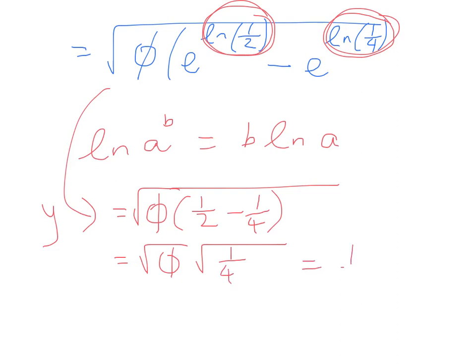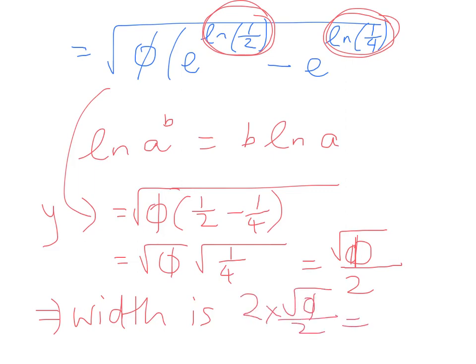Now the width is going to be twice that. So the width is 2 times that, which is the square root of the golden ratio centimetres. So that's the end of that question there.